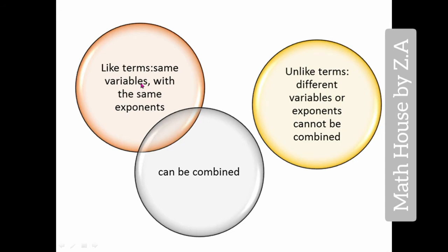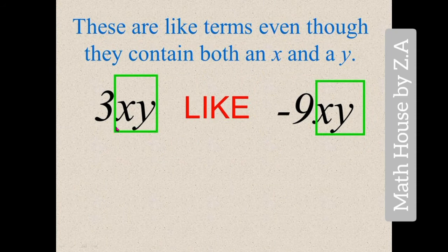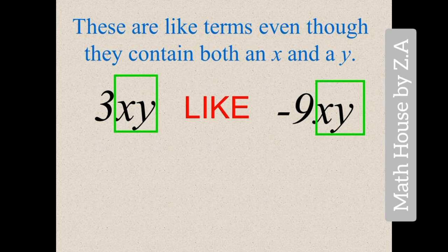Like terms are those terms which have the same variables with the same exponents and can be combined. Unlike terms have different variables or exponents and cannot be combined. For example, 3xy and -9xy are like terms because in 3xy we have xy as variables, and in -9xy we also have xy as variables. Coefficients can be different, signs can be different, but if the variables are the same, they are like terms.